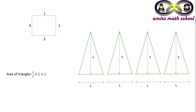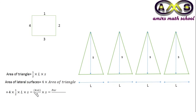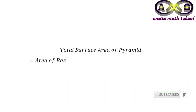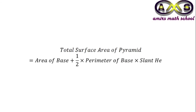The area of each lateral surface (triangle) is half × base × height = (1/2) × L × S, where S is the slant height and L is the length of each side. So the total area of the four lateral surfaces equals 4 × (1/2) × L × S = (4L/2) × S. Since 4L is the perimeter, this equals (perimeter / 2) × S, or half the perimeter times the slant height. Therefore, the total surface area of the pyramid equals the area of the base plus half the perimeter of the base times the slant height.